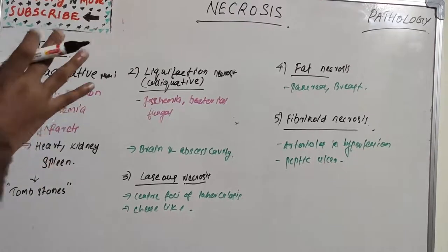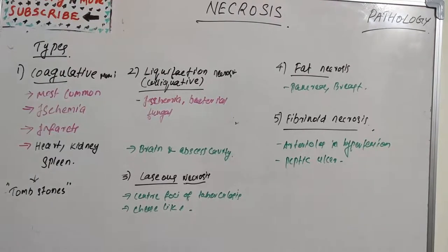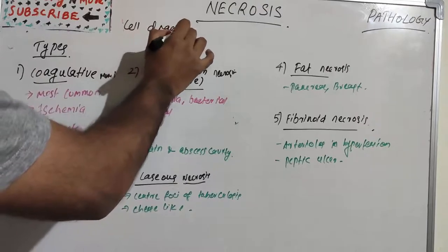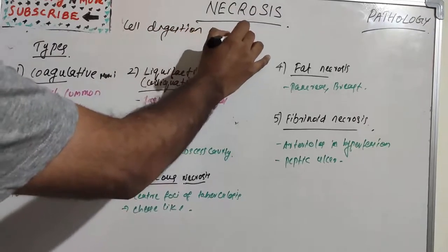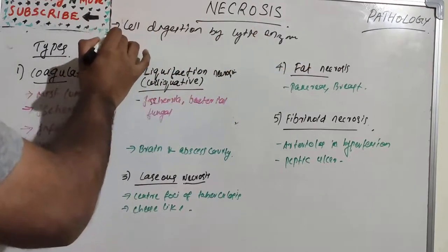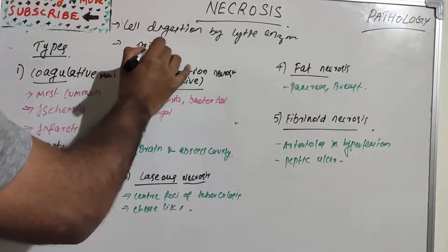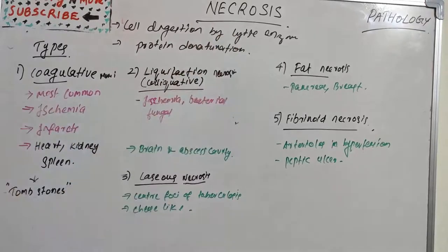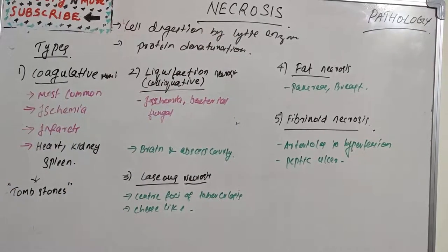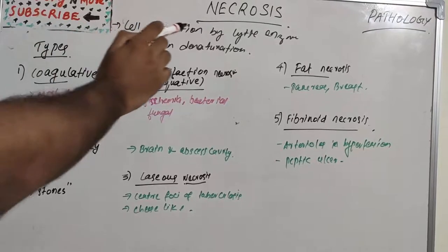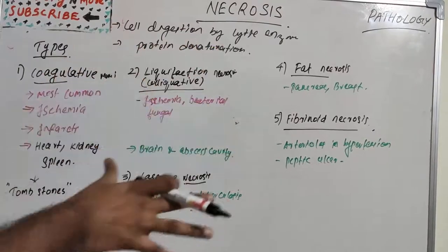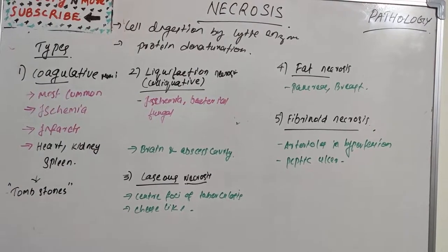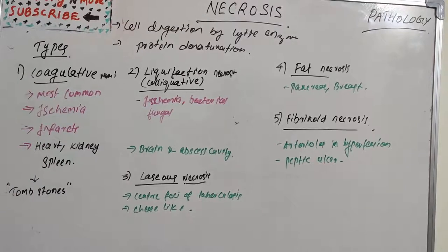There are two features which are present in all of the types of necrosis: cell digestion by lytic enzymes and protein denaturation. This happens in all types of necrosis, but the reason is different and their clinical appearance is also different. Cell digestion by lytic enzymes and protein denaturation are invariably present in all types of necrosis.